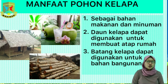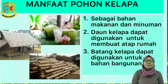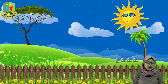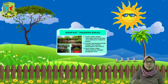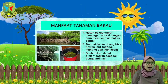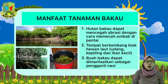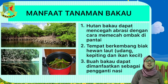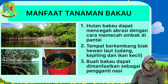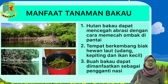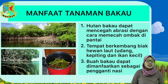Tumbuhan yang kedua adalah tanaman bakau. Ada yang pernah melihat seperti apa tanaman bakau? Tanaman bakau ini biasanya tumbuh di pinggir pantai. Oleh karena itu, hutan bakau dapat kita manfaatkan sebagai pencegah abrasi, dengan cara memecah ombak di pantai.